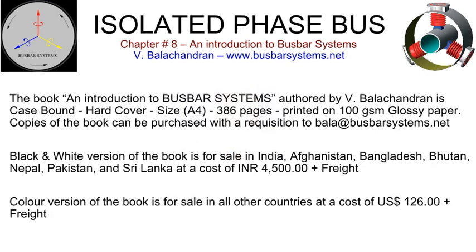The book 'An Introduction to Bus Bar Systems,' authored by V. Balachandran, is case-bound hardcover, size A4, 386 pages, printed on 100 GSM glossy paper. Copies can be purchased by sending a requisition to bala@busbarsystems.net. The black-and-white version is for sale in India, Afghanistan, Bangladesh, Bhutan, Nepal, Pakistan, and Sri Lanka at a cost of 4,500 Indian rupees plus freight. The color version is for sale in all other countries at a cost of US $126.00 plus freight.